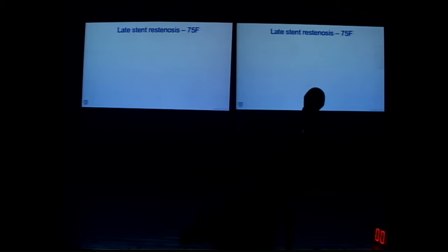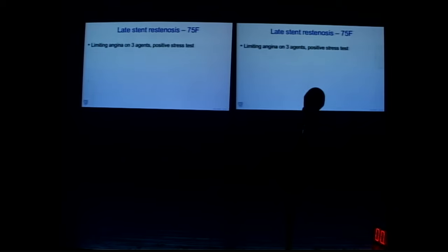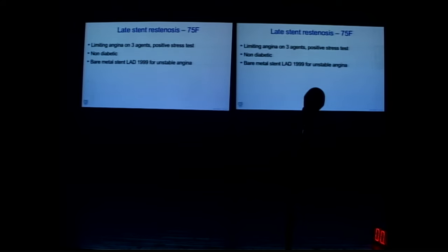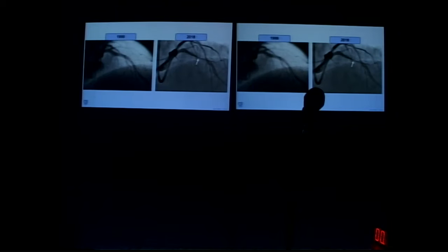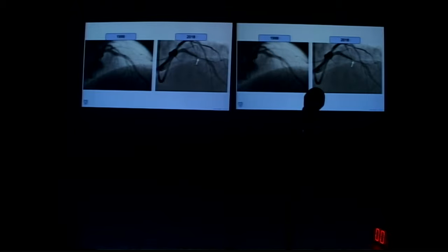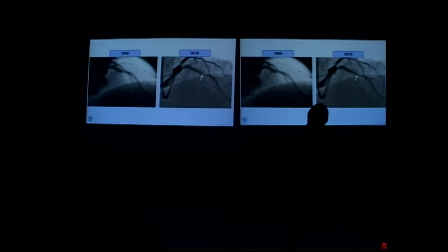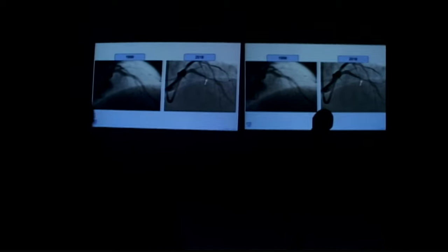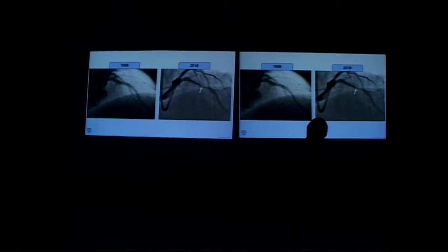Let's start with a case of stent failure. This is a 75-year-old female patient from toward the end of last year — three anginal agents, positive stress test, and she had a bare metal stent nearly 20 years ago for unstable angina. Her angiogram shows in-stent restenosis of 70-80%. It's not obviously a complex lesion; it looks very straightforward — you'd think we could be done in two or three minutes.